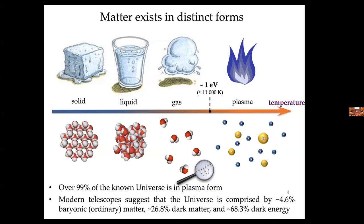Plasma constitutes over 99% of the known universe, but there's a catch — we only know a tiny fraction of the universe, about 4.6%. Less than five percent is ordinary matter; most of it is dark matter and dark energy. So from what we know, plasma is a big fraction of ordinary matter.